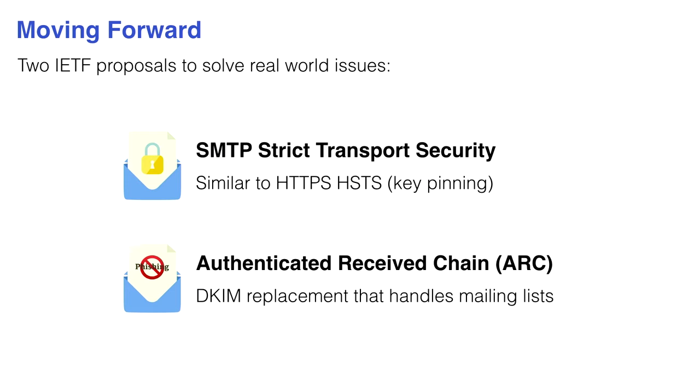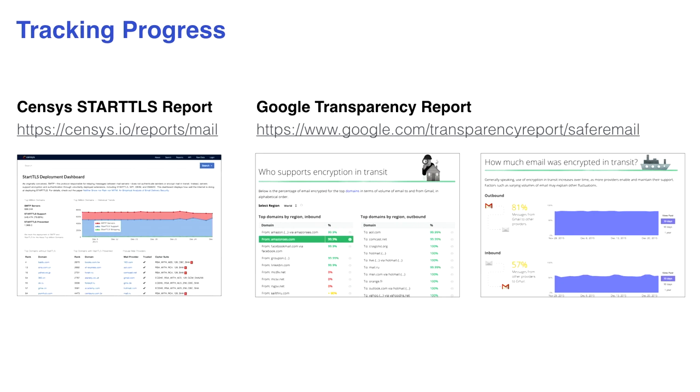Zum ersten Mal kann man jetzt ziemlich sicher sein, dass wenn man den richtigen Public Key hat, man das E-Mail an den richtigen Ort schickt. Bei ARC geht es darum, dass es einen Key gibt der über DNS veröffentlicht ist. Dieser DNS-Record kann zwar gefälscht sein, aber es ist besser als was wir heute haben. Als Ersatz für DKIM gibt es dieses ARC – Authenticated Receive Chain – das hilft damit umzugehen, wenn Messages geändert werden, zum Beispiel wenn eine Signatur angehängt wird.